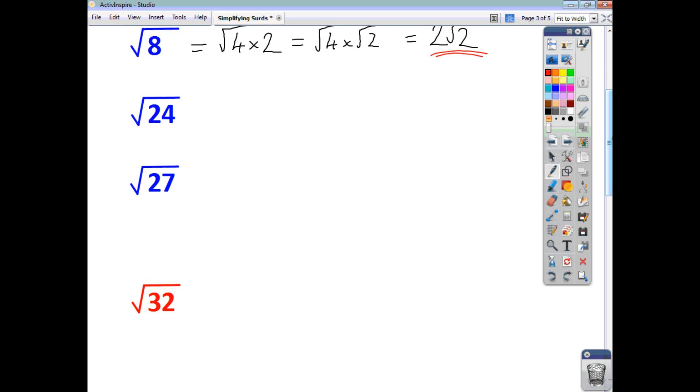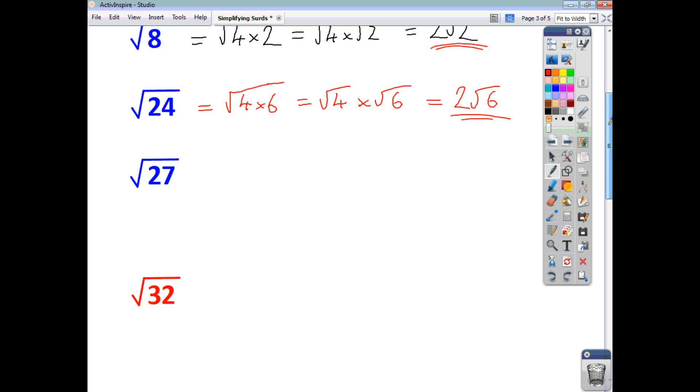For root 24, the square factors of 24. Again, you're talking of 4. So it's root 4 times 6 which is the same as root 4 times root 6. And because root 4 is 2, you write it as 2 root 6. And there are no square factors of 6 so that's reached the end of the work. That's our final answer.